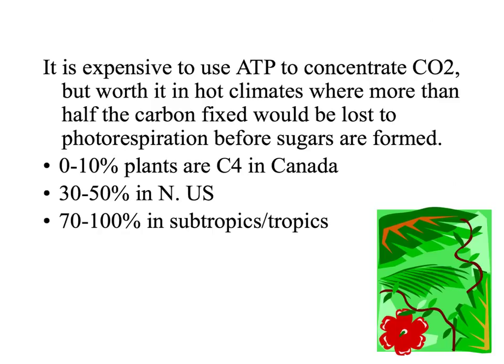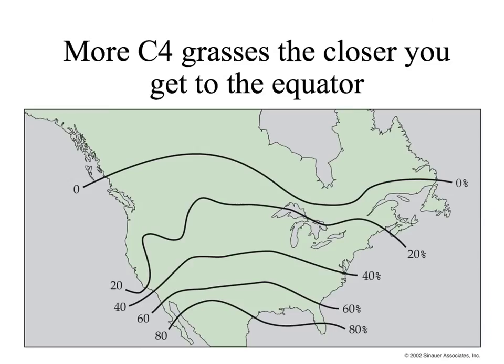Consequently, very few northern plants are C4. In Canada, less than 10% of plants are C4. In the northern U.S., 50% or less. In the subtropics, like Florida, into the tropics, more than 70% of plants are C4. If we look just at grasses, we can see there are many more C4 grasses the closer you get to the equator.